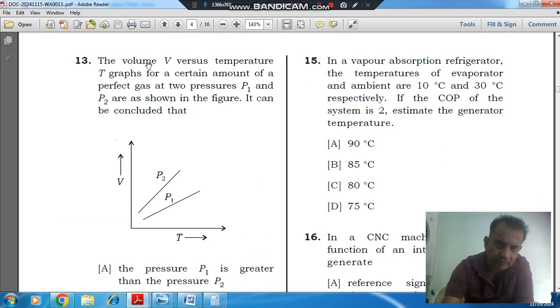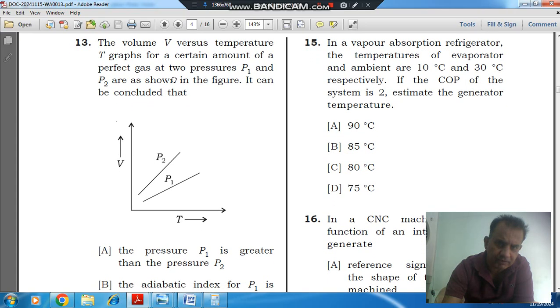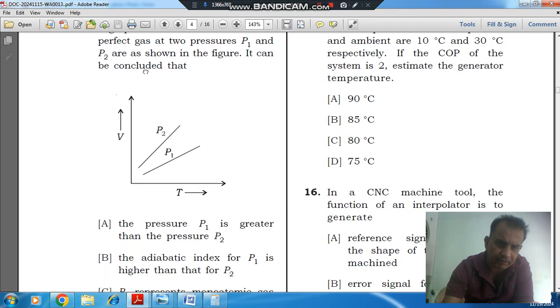The volume V versus temperature T graph for a certain amount of perfect gas at two pressures P1 and P2 are as shown in the figure. It can be concluded that: